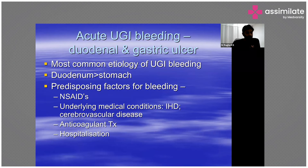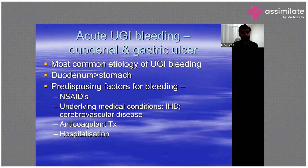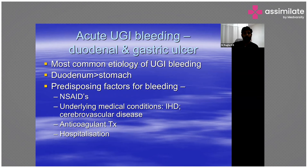After varices, the next cause is peptic ulcer disease — duodenal and gastric ulcers — probably the most common etiology for upper GI bleeding, with duodenal bleeding being more common than gastric. Predisposing factors include NSAIDs such as ibuprofen, Advil, Aleve, Motrin, and naproxen.